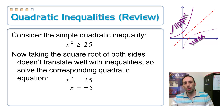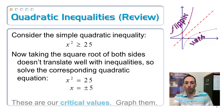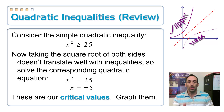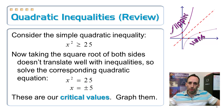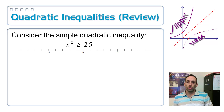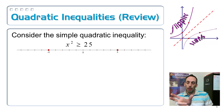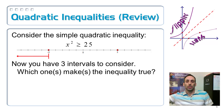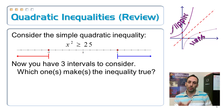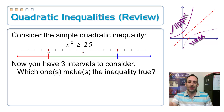Those two numbers are called our critical values — the boundary points of our inequality. We take those numbers and put them on a number line. I've got −5 and +5. It might be stuff in between there or on the outside. It breaks into three intervals: smaller than −5, greater than +5, or everything in between −5 and 5. We have to figure out which ones make the inequality true.